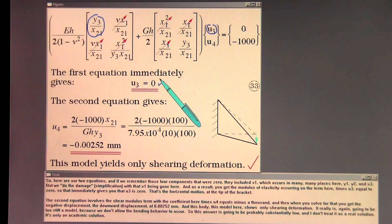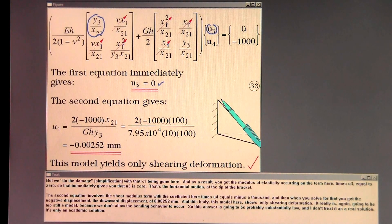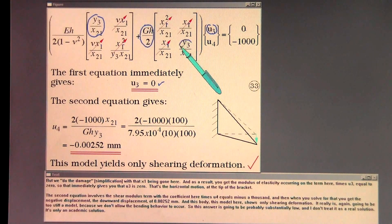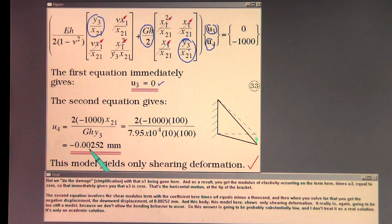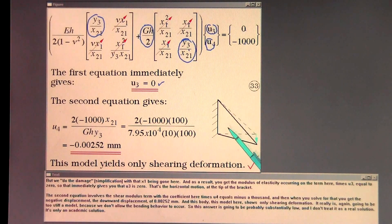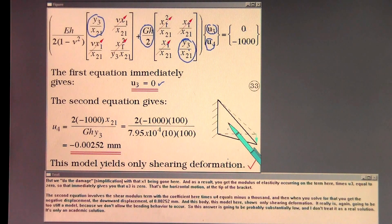That's the horizontal motion at the tip of the bracket. The second equation involves the shear modulus term with the coefficient here times u4 equal to minus 1,000. When you solve for that, you get the negative displacement — the downward displacement of 0.00252 millimeters. This model shows only shearing deformation. It's going to be too stiff a model because we don't allow the bending behavior to occur. So this answer is going to be probably substantially low, and I don't treat it as a real solution — it's only an academic solution.